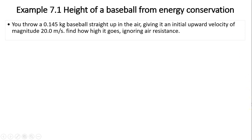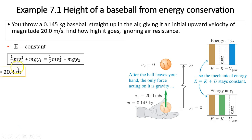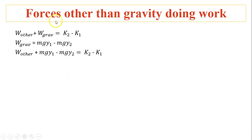Let's look at the first example. You throw a ball straight up, giving it an initial upward velocity of 20 m/s. Find how high it goes; ignore air resistance. Since the only force acting on the ball is gravity, total mechanical energy is constant. From position 1 to position 2: V1 equals 20, Y1 equals 0, V2 equals 0, solve for Y2. Substituting everything, Y2 equals 20.4 meters.